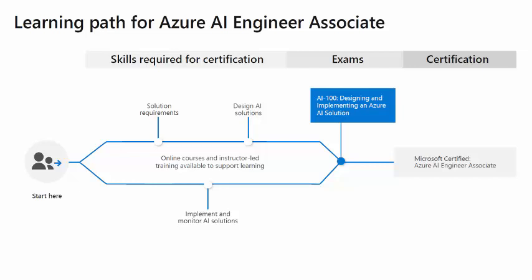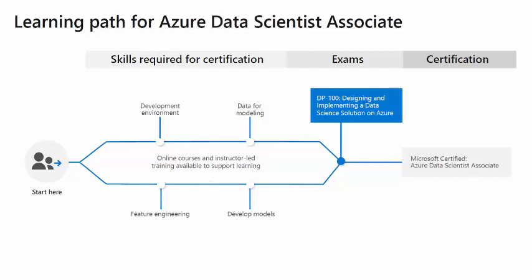The Data Scientist Associate exam, DP-100, is considered the toughest. It focuses on both theoretical and practical aspects of data science. You need to know when to use which algorithm, how to do feature engineering, how to build and deploy a model, and how to use the Azure platform to carry out all your data science activities.